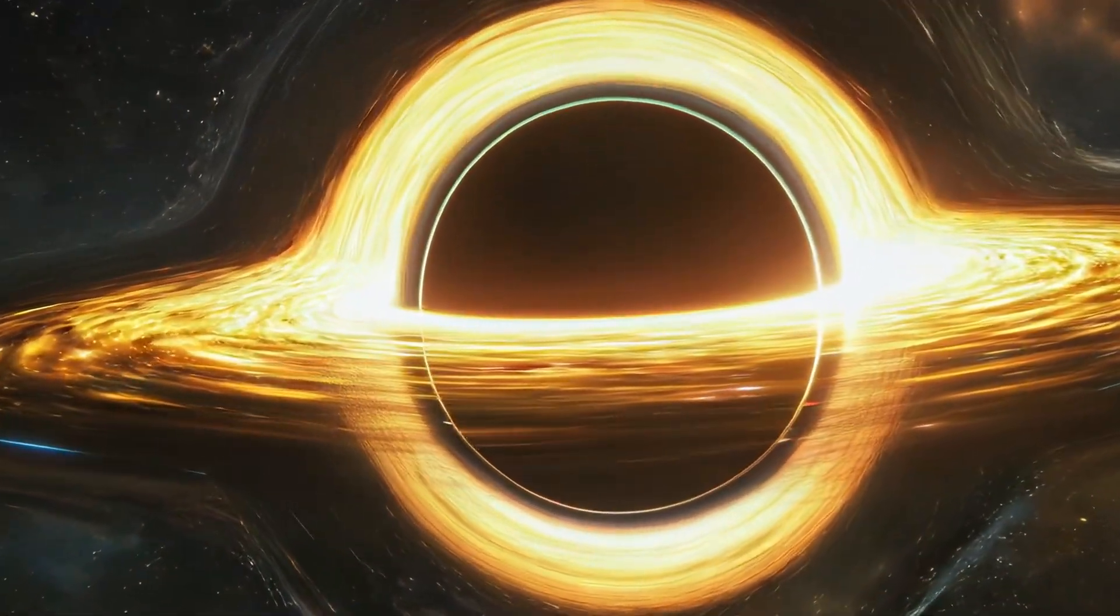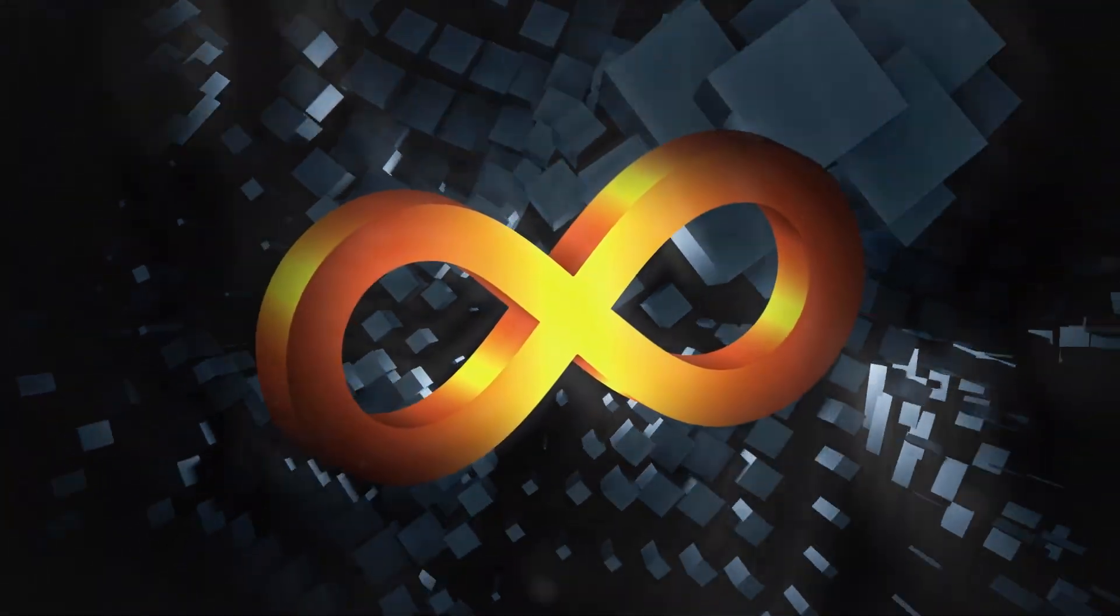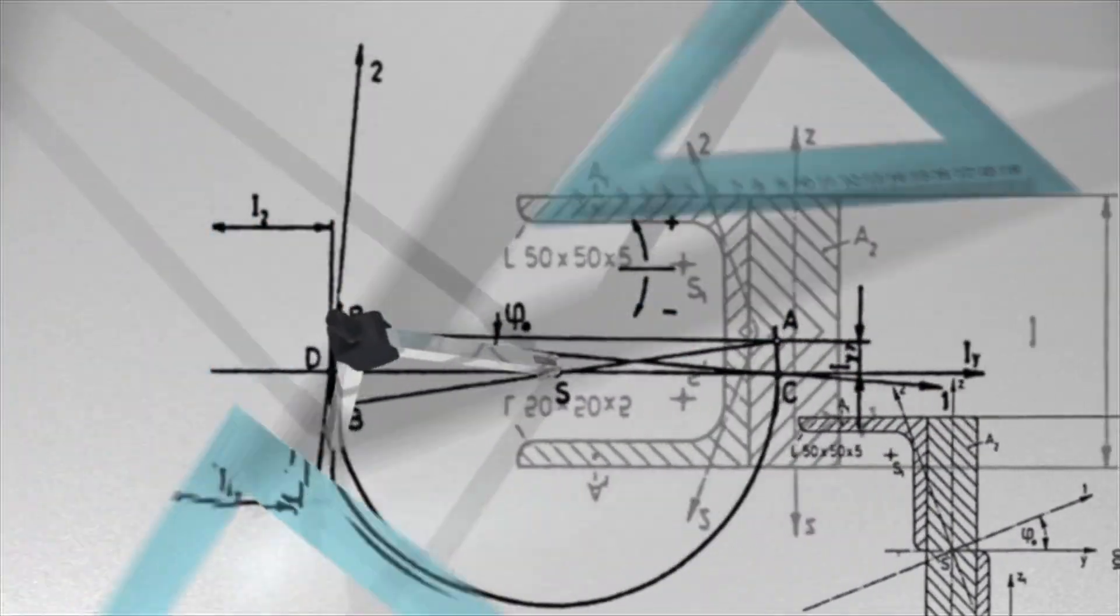According to classical general relativity, everything inside the event horizon is pulled to a single point, the singularity. This is where gravity becomes infinite. Spacetime curves infinitely. And all matter is crushed into zero volume. But most physicists think this can't be the full story. The singularity is a prediction of equations, but it may mean that our math is incomplete.